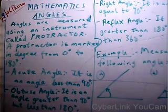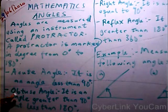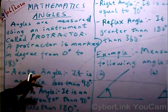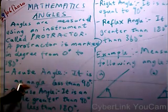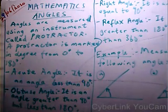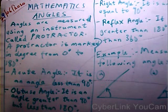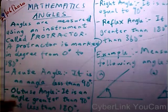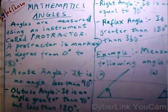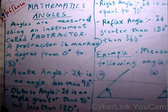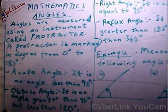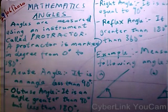Now let's look at some angles. The first one is an acute angle. An acute angle is an angle less than 90 degrees. So an angle that ranges from 0 to 89.999 is an acute angle. For example, 5 degrees, 10 degrees, 50 degrees, 60 degrees — these are examples of an acute angle.